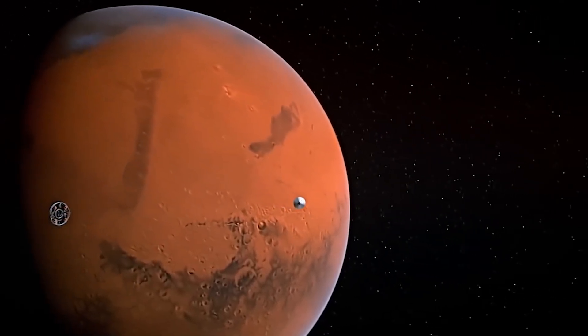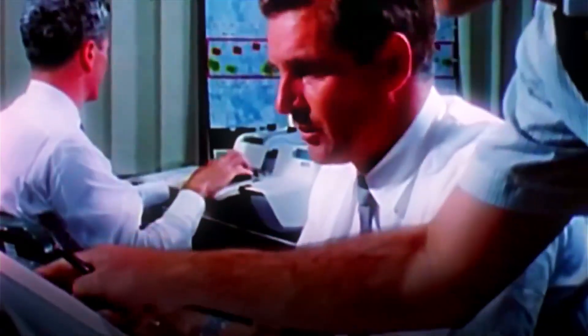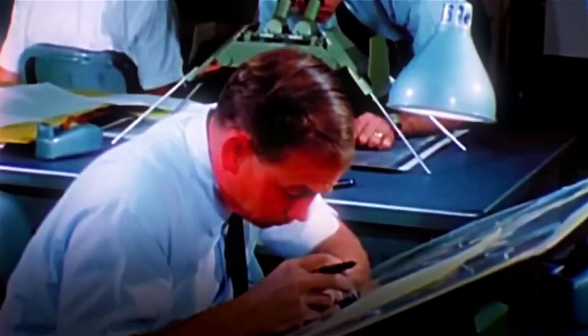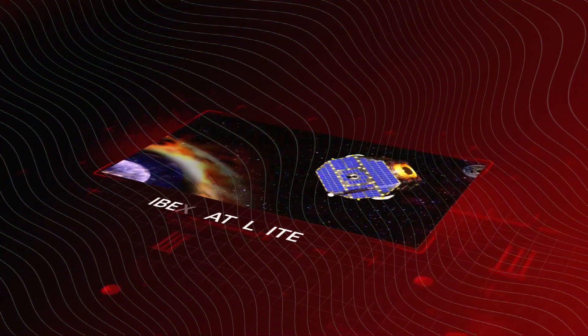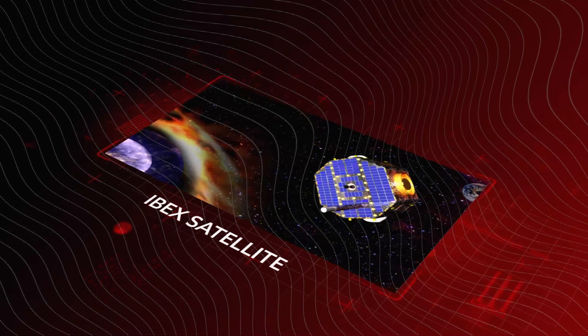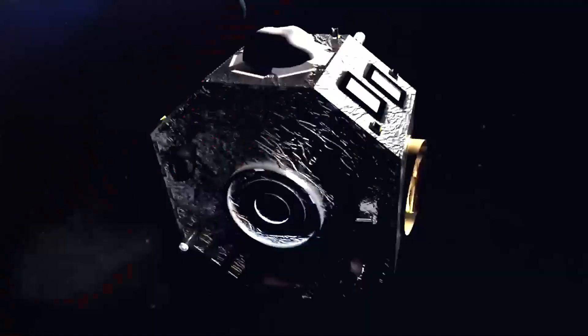The idea that the heliopause might not be a fixed boundary has been around for some time, but new data from Voyager 1 and Voyager 2, as well as NASA's Interstellar Boundary Explorer satellite, has shed more light on this phenomenon.